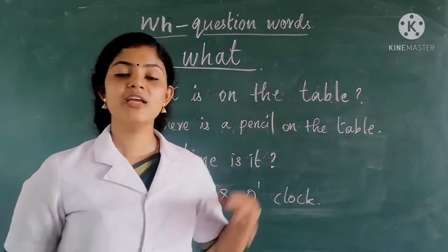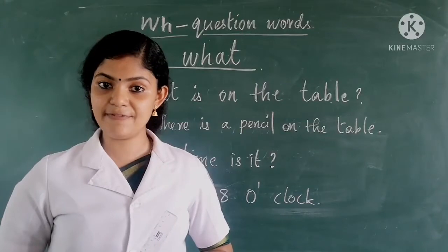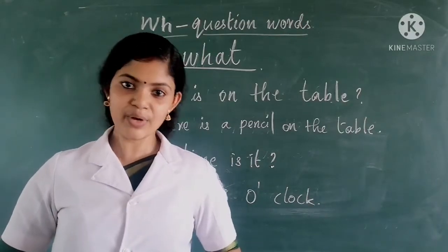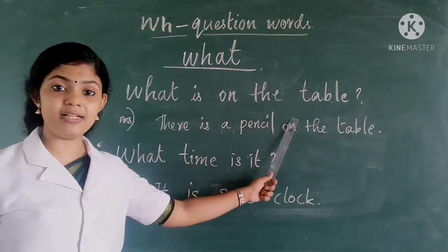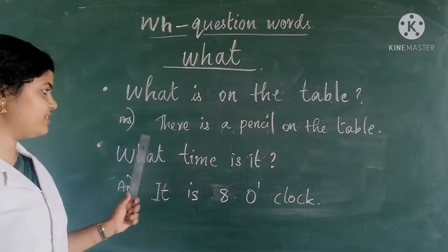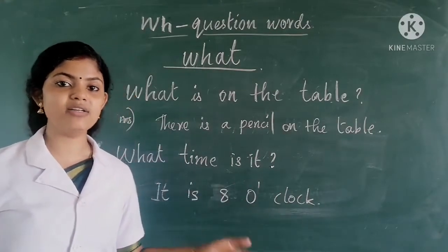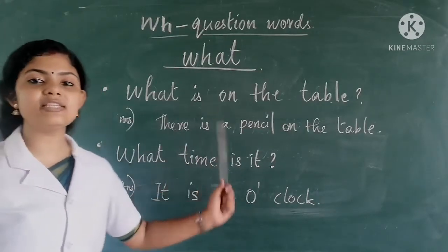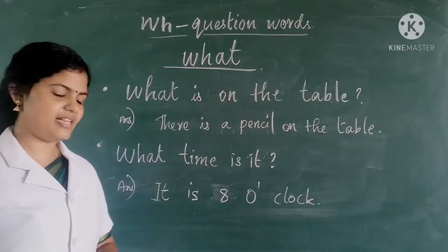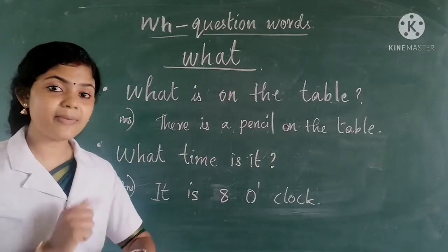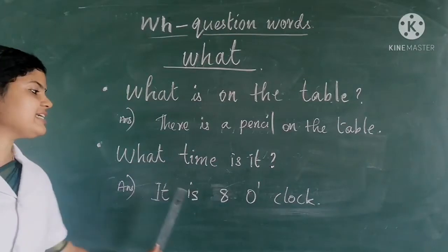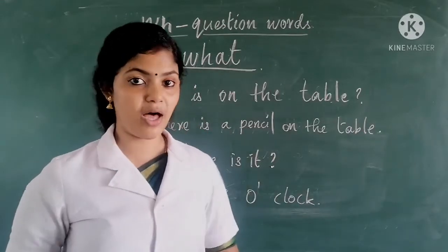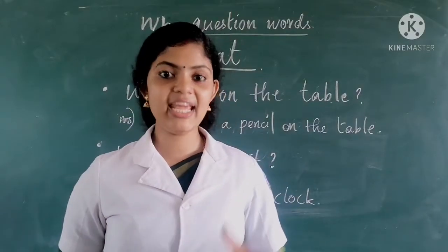Next is WHAT. We use the question word WHAT to ask about information — information about any object, idea, or action. For example: What is on the table? Answer — there is a pencil on the table. Next: What time is it? Answer — it is 8 o'clock. So we use WHAT to get information about any object, idea, or action.